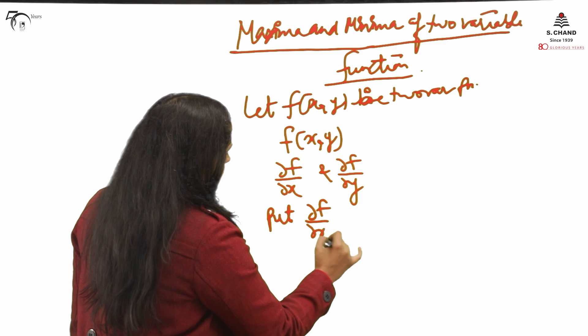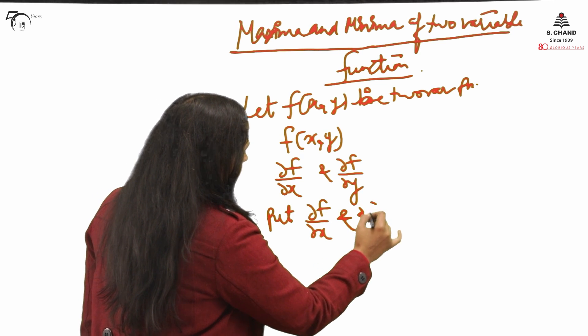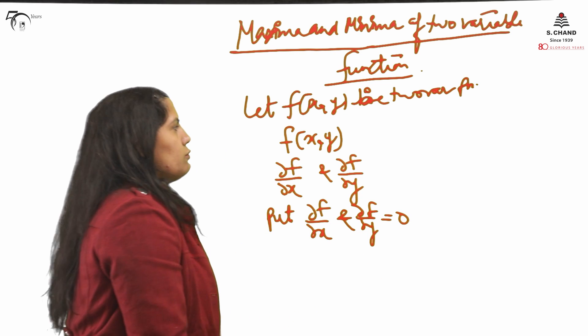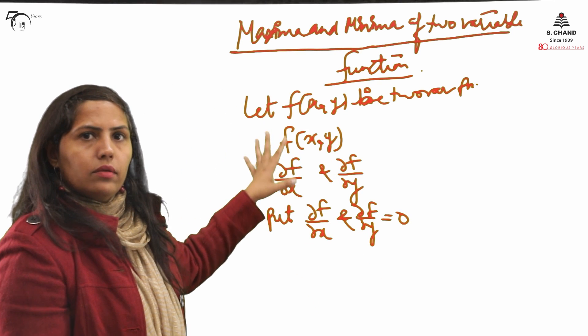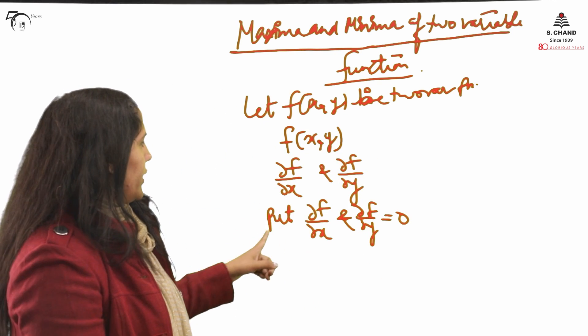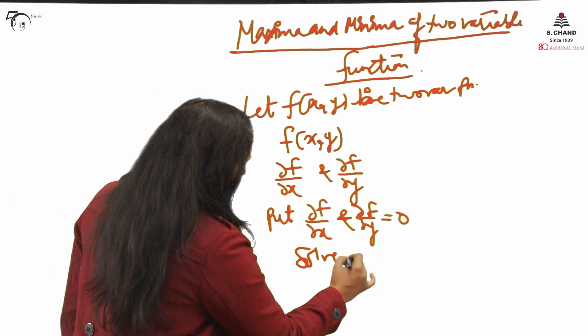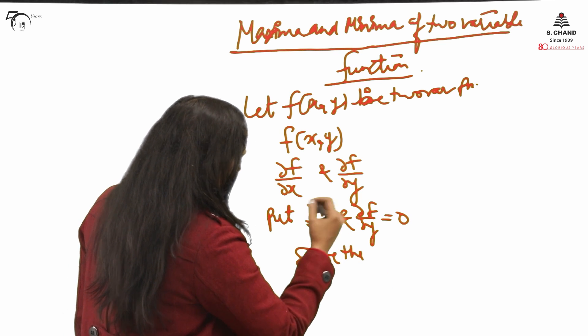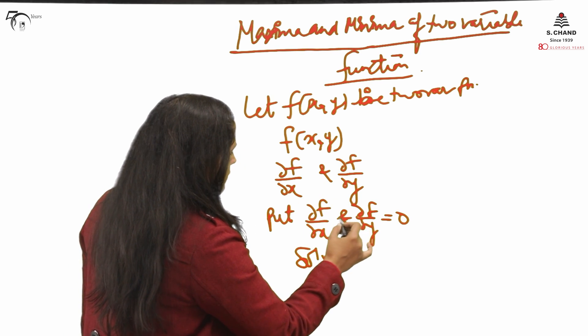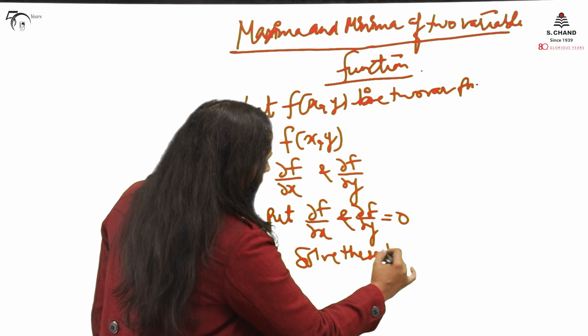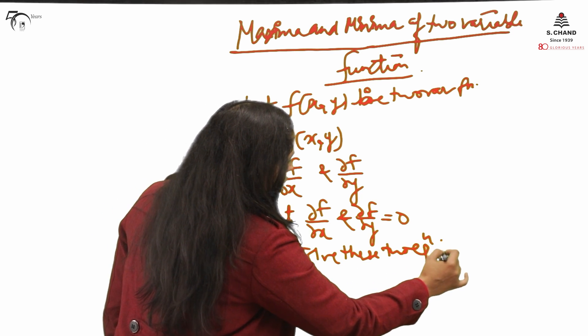∂f/∂x and ∂f/∂y equal to 0. This is first step. Function will be given, partial derivatives we will be finding, then equal to 0 and solve the two equations. ∂f/∂x = 0, ∂f/∂y = 0. Solve these two equations to find or to get the values of x and y.